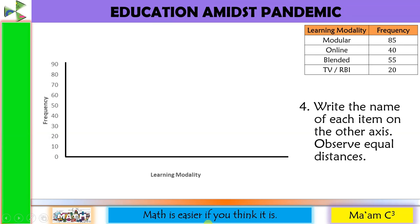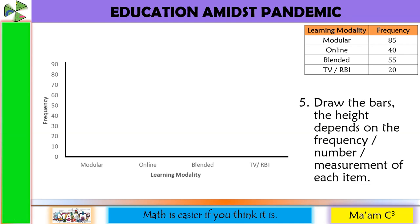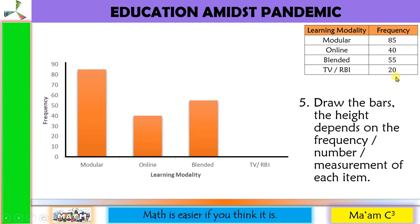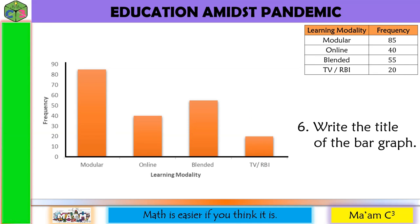Step four, write the name of each item on the other axis. Observe equal distances. The learning modalities are: modular, online, blended, and TV or radio-based instruction. Step five, draw the bars. The height depends on the frequency of each item. For modular, frequency is 85. For online, we have 40. For blended, we have 55. For TV or radio-based instruction, we have 20. Step six, write the title of the bar graph — Students' Preferred Learning Modality.